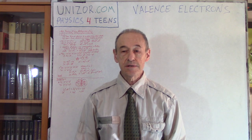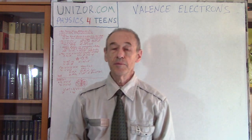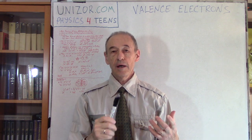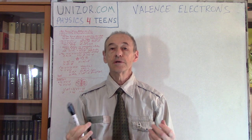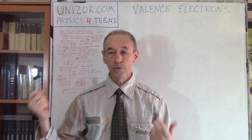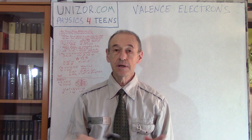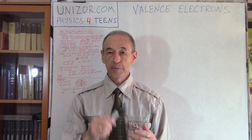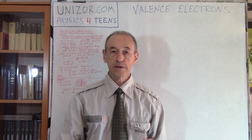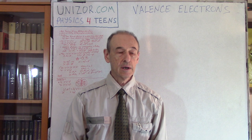This lecture is part of the course called Physics for Teens, presented on unizor.com. I suggest you watch this lecture from the website because it has a textual description next to it. If you go to the menu and choose the Physics for Teens course, the part this lecture belongs to is Atoms, which explains how the combination of atoms makes a molecule.